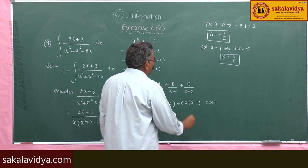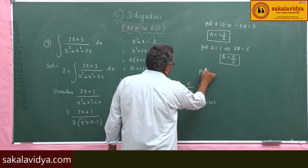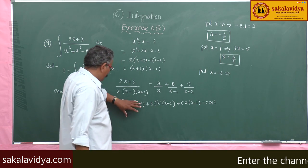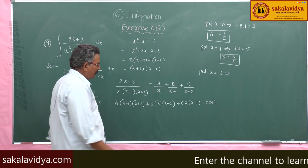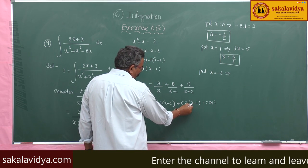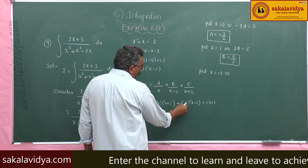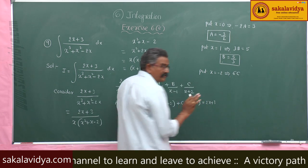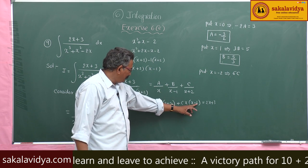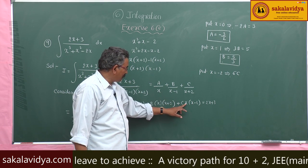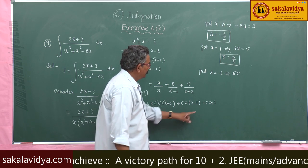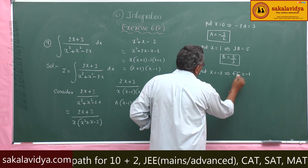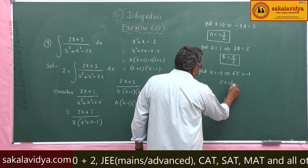Now put x = -2. The A and B terms become zero. We get C·(-2)·(-2 - 1) = 2(-2) + 3. Checking: (-2-1)(-2+2) gives 6C = -4 + 3 = -1. Therefore C = -1/6.